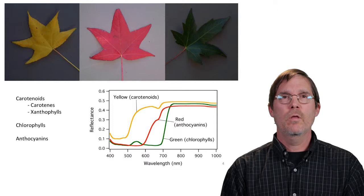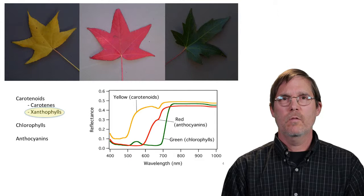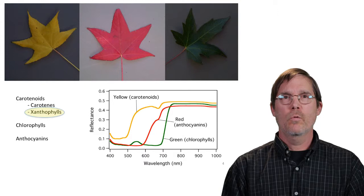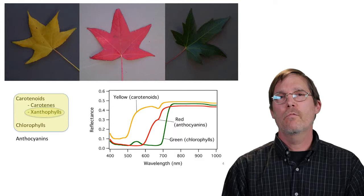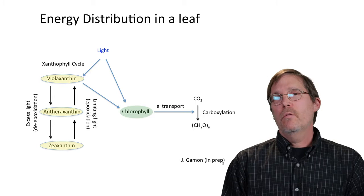The groups of pigments I'll be talking about are primarily the xanthophylls — a group of carotenoid pigments — along with chlorophylls. I won't be talking about anthocyanins, but mainly the xanthophylls and the carotenoids, and the relative amounts of carotenoid and chlorophyll pigments is the focus of this talk.